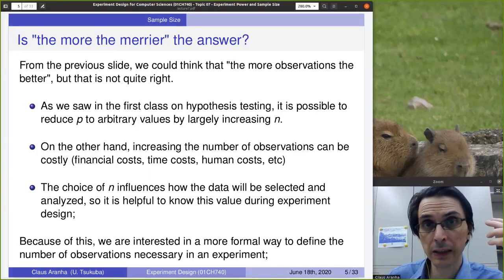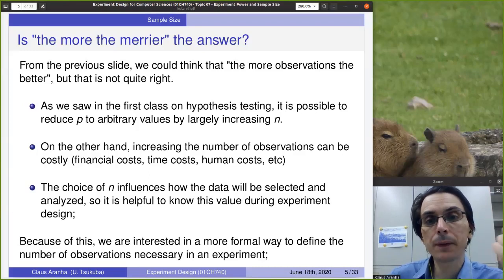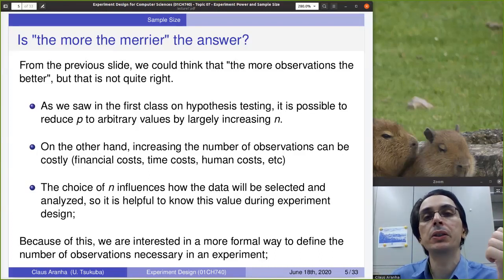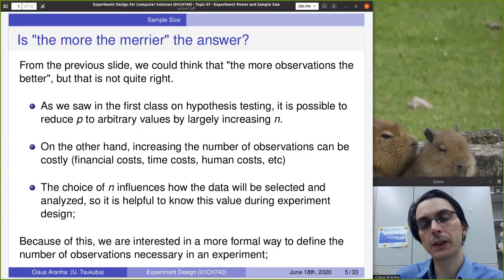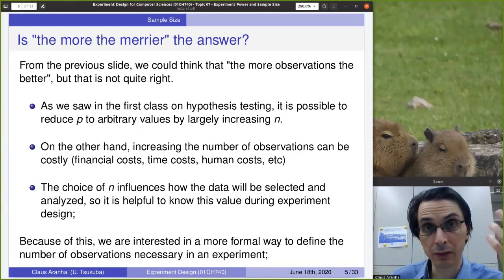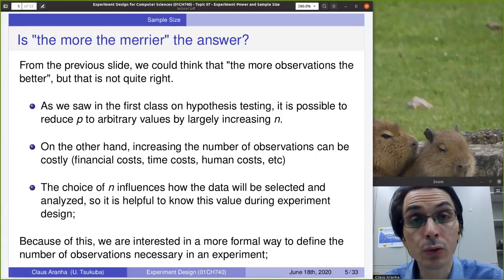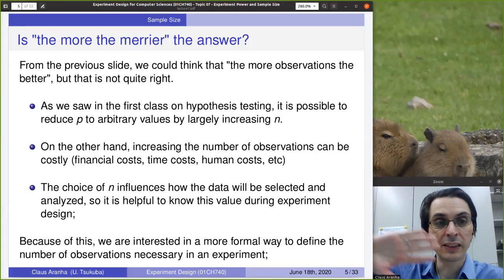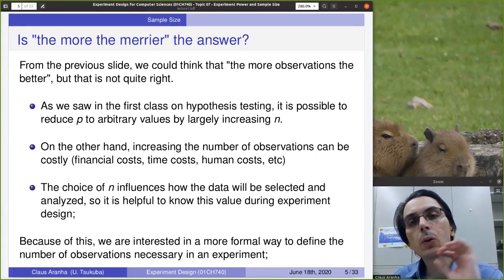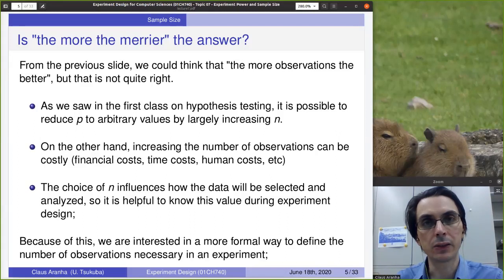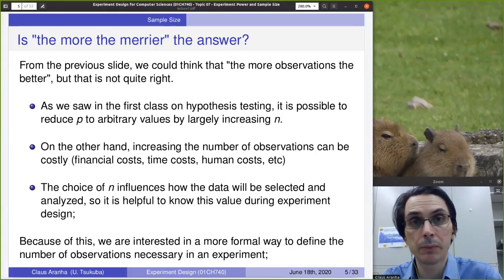The number of observations you have available will also influence your data preparation step. Before doing data analysis, you might have to transform your data, treat outliers, or choose different statistical tests — all depending on how much data you actually have. Because of these codependencies, instead of just getting as many observations as possible, you want to calculate the number of observations in advance, so you can use this number to make decisions about data preparation and test selection.